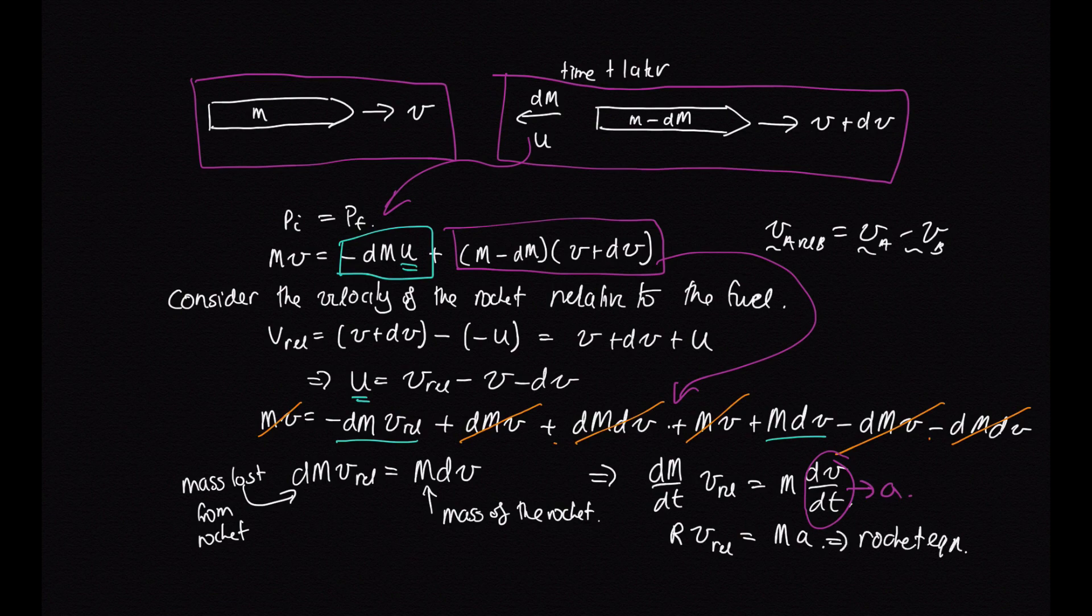And it tells us about how quickly a rocket accelerates. Now, the other thing we might care about for our rocket is, well, how fast is it actually going? So if at time t initial, the rocket has mass m initial and it has speed v initial.